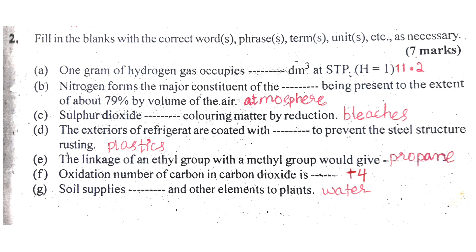Number G: Soil supplies nitrogen and other elements to plants. Soil provides the same nutrients and elements to plants.